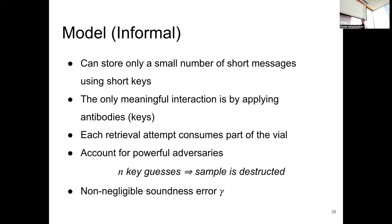The non-negligible soundness error is with respect to the keys themselves and the closeness between the keys. There is something about antibodies that they have close features to each other — you might be using a different antibody that still has some common features, and due to randomness in biochemical procedures, you might get a matching protein. So we account for that by giving non-negligible soundness error to account for closeness between keys.